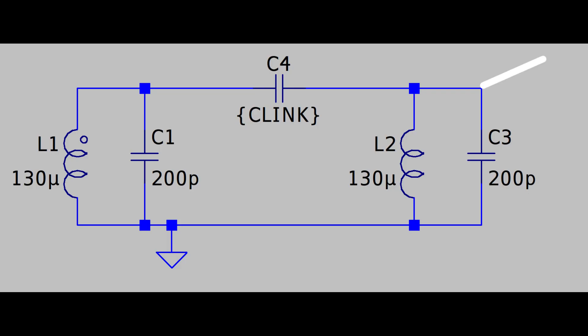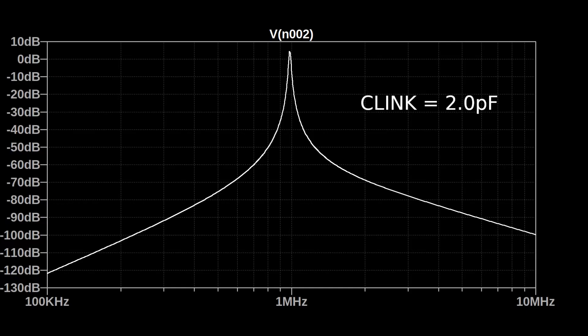We can see that if this collection of components was a crystal radio, somewhere around two picofarads would be the ideal linking capacitor. Part of tuning the crystal radio for optimum performance will be to adjust this linking capacitor to the correct value that works the best with the real components.